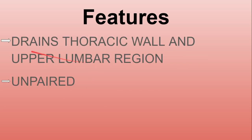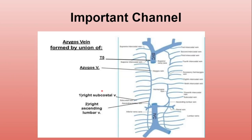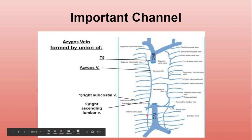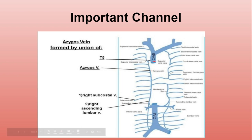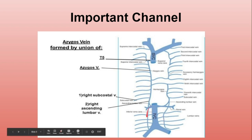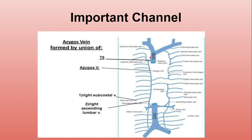First, the features of the azygous vein: it drains from the thoracic wall and the upper lumbar region, and one important feature is that it is unpaired. The azygous vein is considered a very important channel between the superior vena cava and inferior vena cava because it directly connects both of these vena cavae.